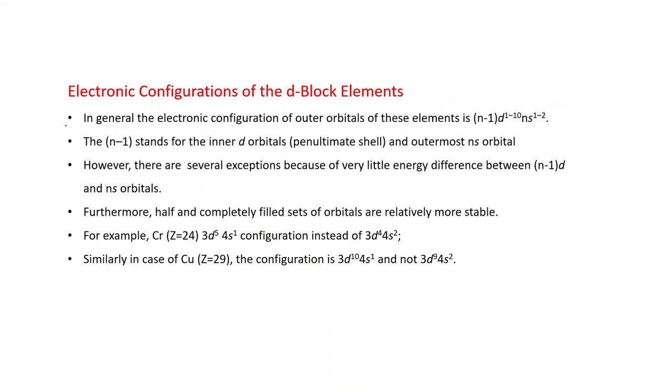Electronic configuration of the D block elements. In general, the electronic configuration of outer orbitals of these elements is (n-1)d^1-10 ns^1-2. (n-1) stands for the inner D orbitals and these inner orbitals are also known as the penultimate shell. However, there are several exceptions to this general electronic configuration because of very little energy difference between (n-1)d and ns orbitals. Furthermore, half and completely filled sets of orbitals are relatively more stable.